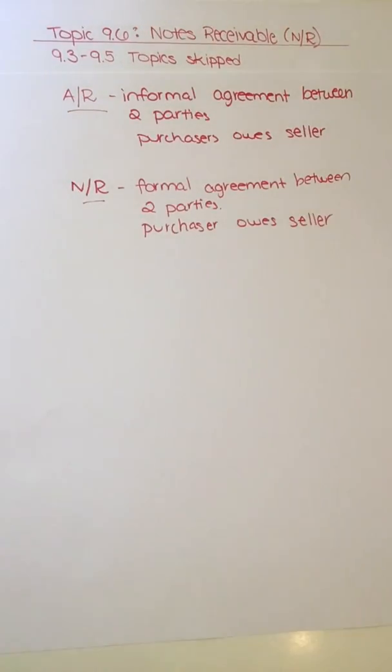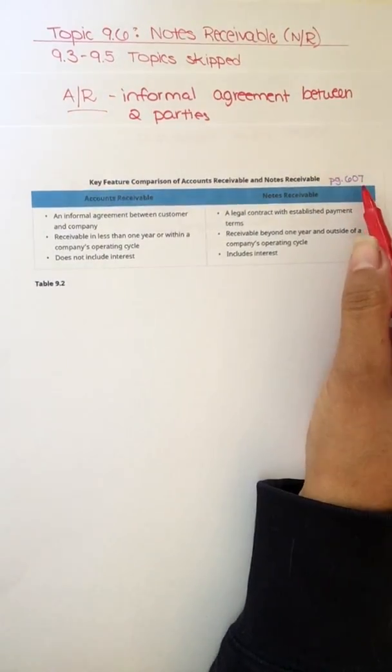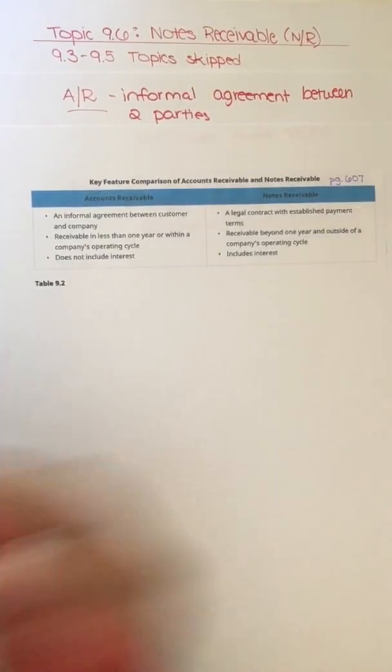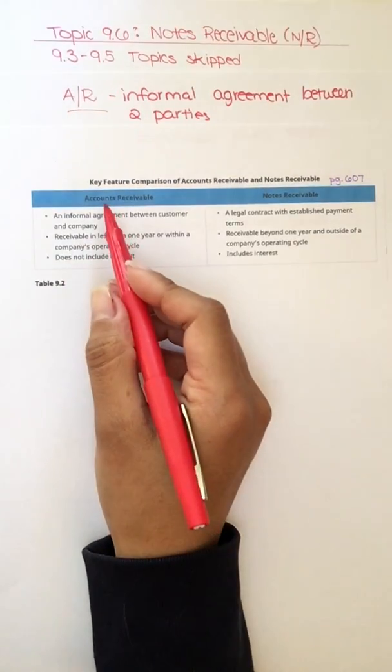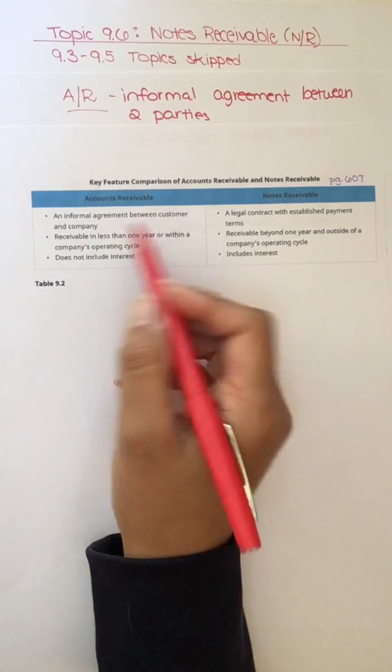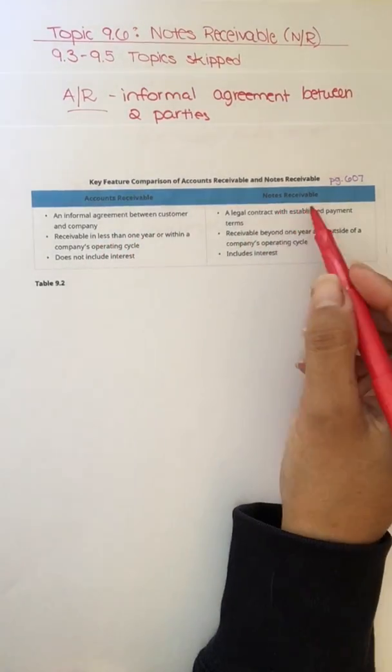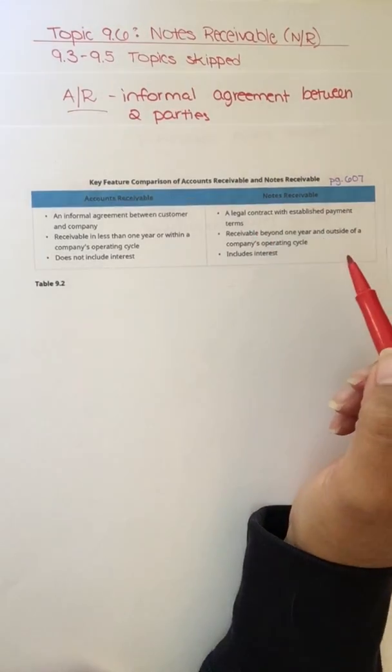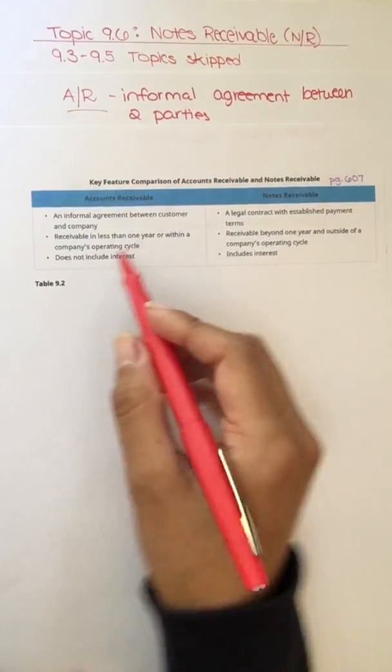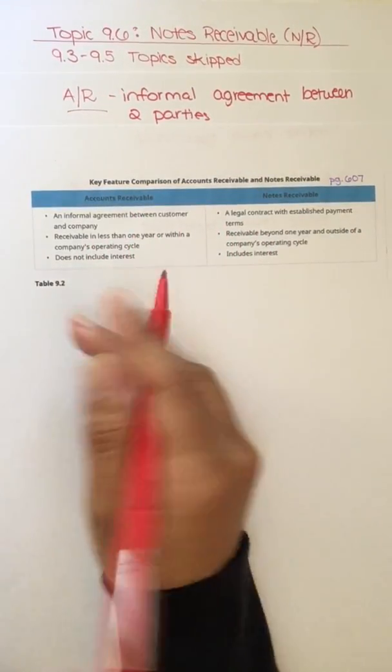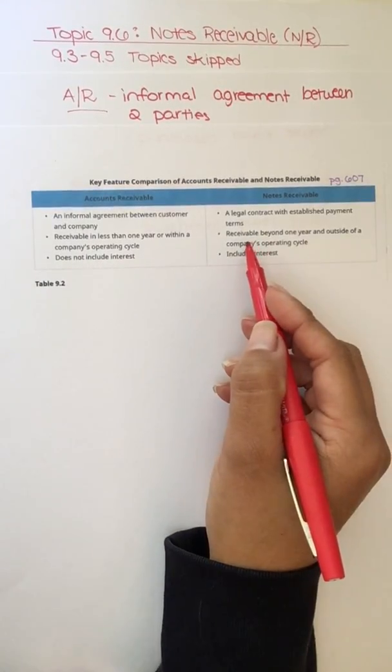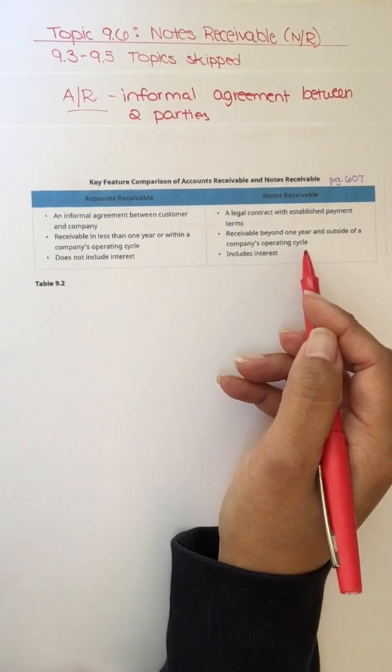There is a nice summary in Exhibit 9.2 on page 607 of your book that compares accounts and notes receivable. So if you want to take a look at that, it reminds us that AR is an informal agreement between the two parties. A note receivable is a more formal legal contract between the two parties. Accounts receivable is usually within the operating cycle. We said that they try to collect within 30 to 60 days.